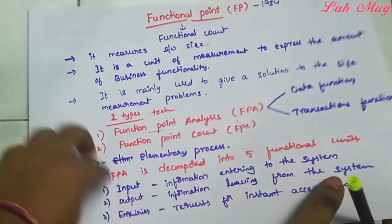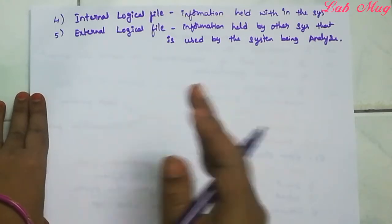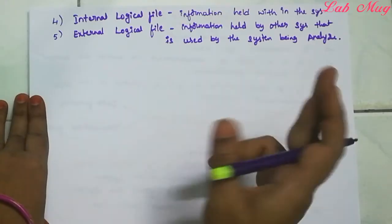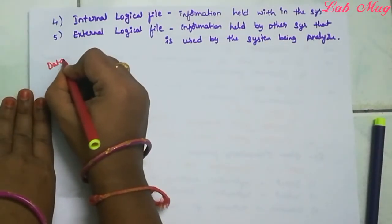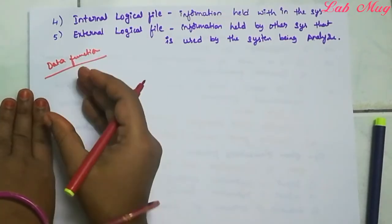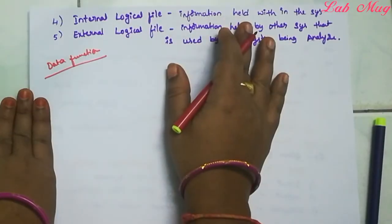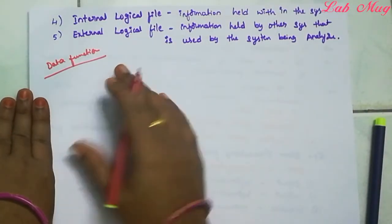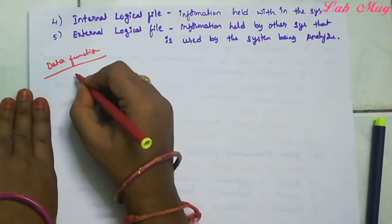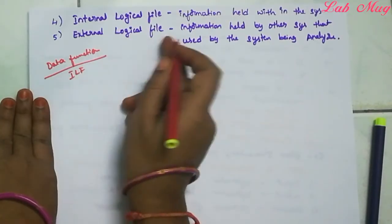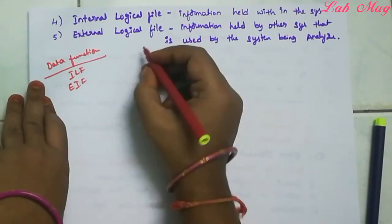So in summary: Input, Output, Inquiries, Internal Logical File, and External Logical File - total five types of units. In Functional Point Analysis, the five categories are: External Inputs, External Outputs, External Inquiries, Internal Logical Files (ILF), and External Interface Files (EIF). Data functions include ILF and EIF; Transaction functions include External Input, External Output, and External Inquiries.